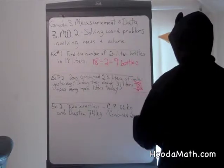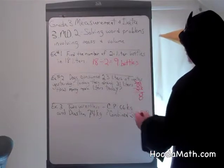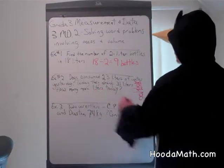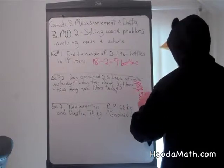20 and 11 is 31, 11 take away 3 is 8, and 2 take away 2 is 0. So there are 8 more liters of water consumed today by the doggies.